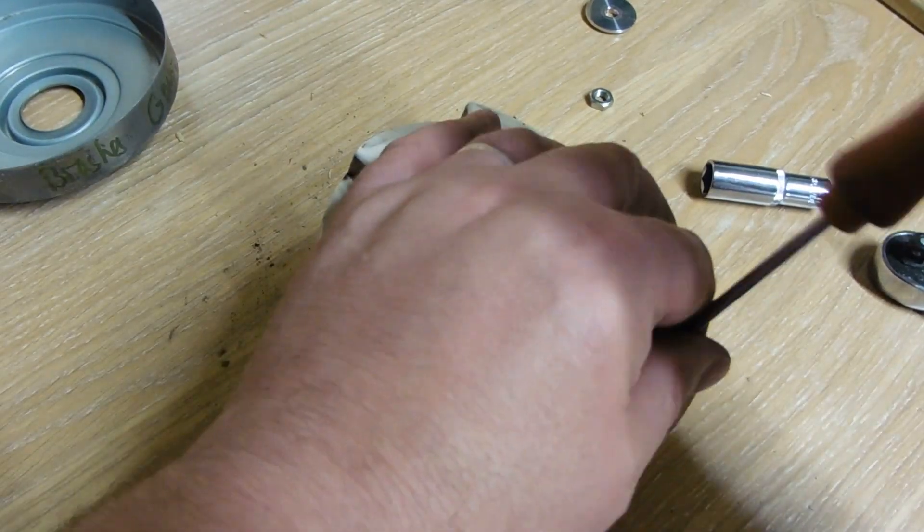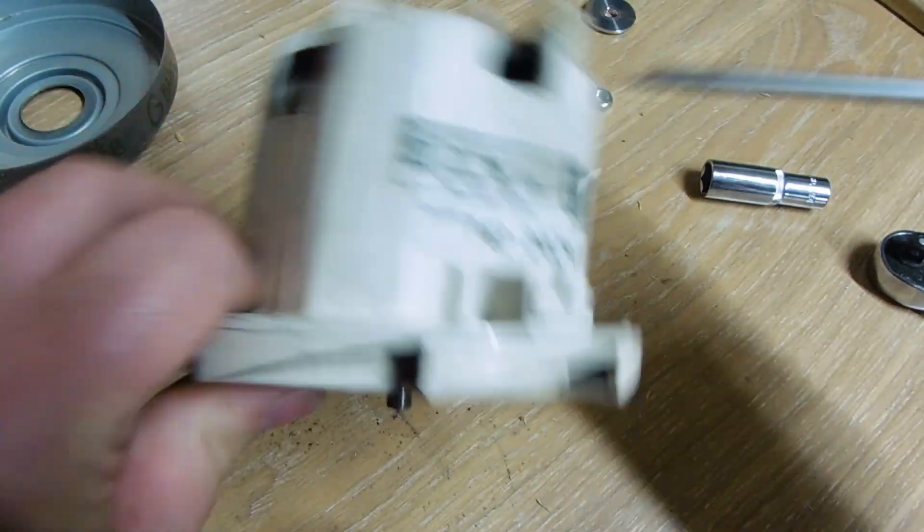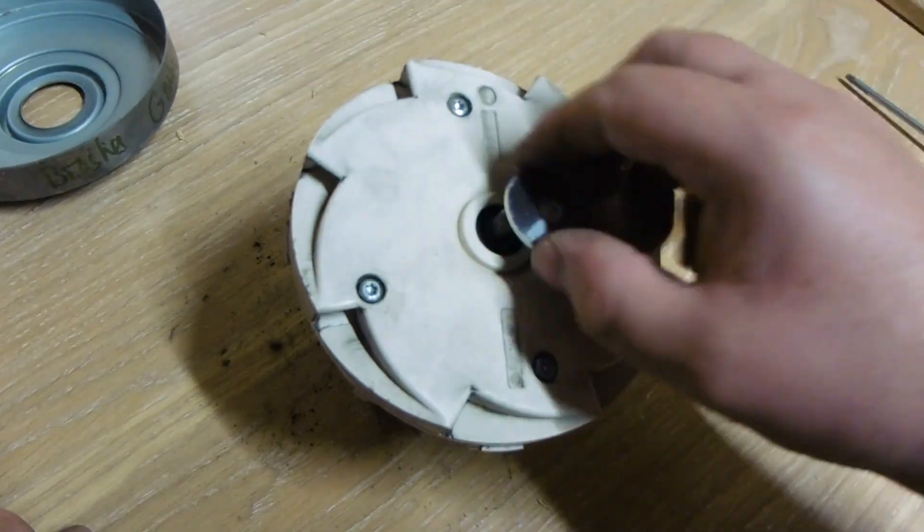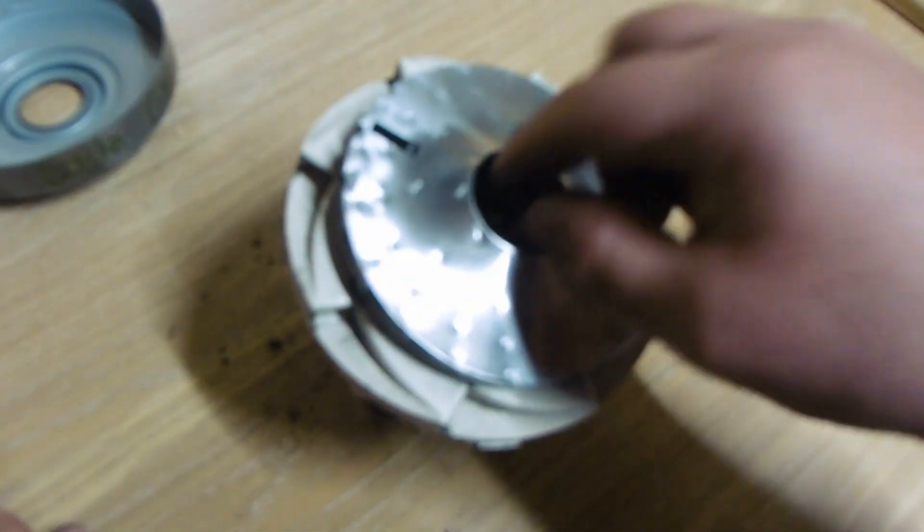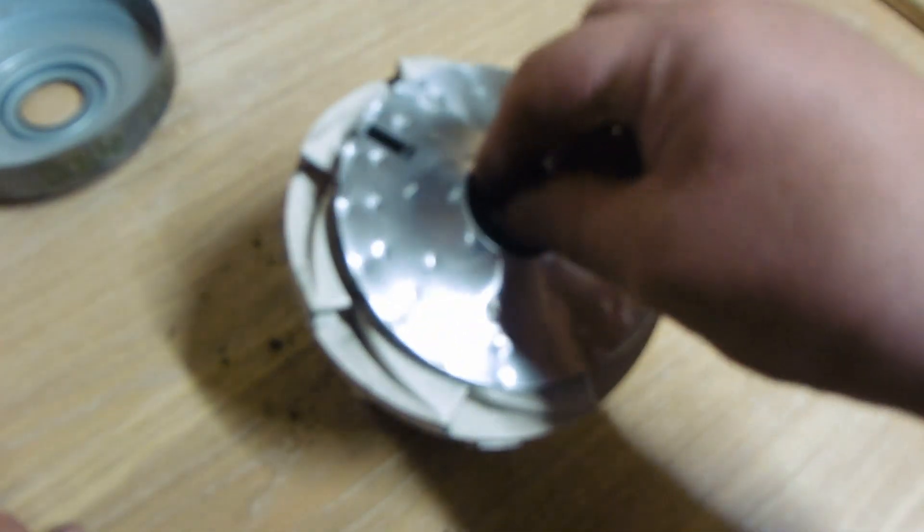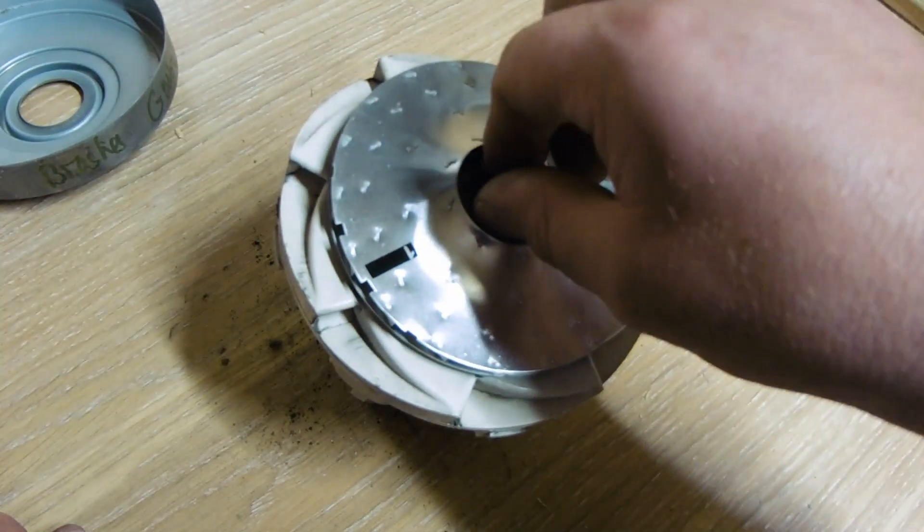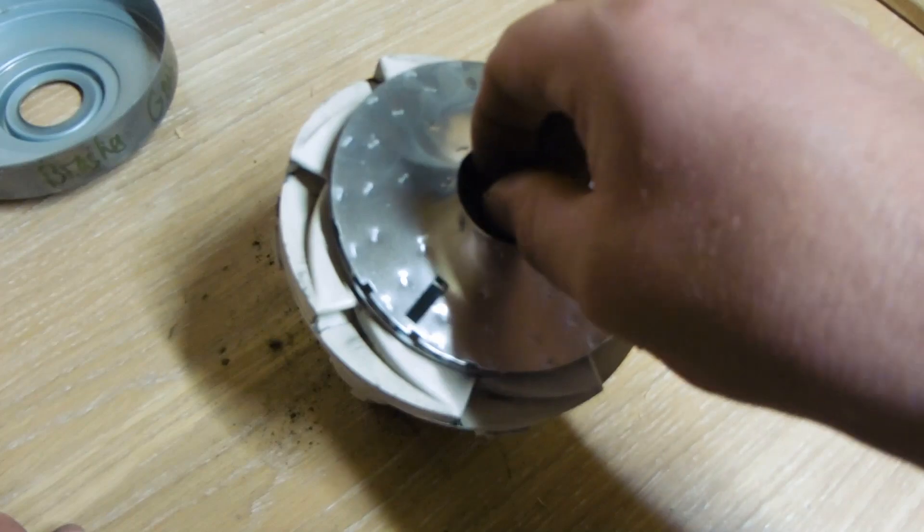As we all know, hoovers nowadays are expensive. So if it's literally a pound, a 15 pound connector block which gets your whole hoover up and running again, I think that's not a bad way to get a bit more life out of your vacuum.